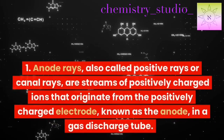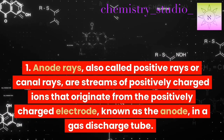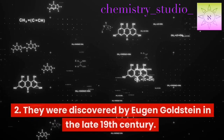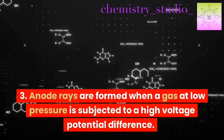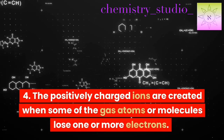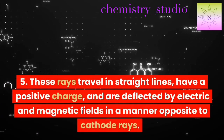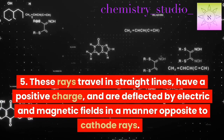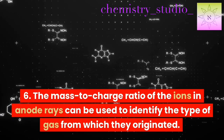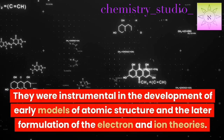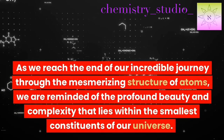Anode rays, also called positive rays or canal rays, are streams of positively charged ions originating from the positively charged electrode (anode) in a gas discharge tube. Discovered by Eugen Goldstein in the late 19th century, they are formed when gas at low pressure is subjected to high voltage. The positively charged ions are created when gas atoms or molecules lose one or more electrons. They travel in straight lines, have a positive charge, and are deflected opposite to cathode rays. The mass-to-charge ratio of the ions can identify the type of gas. They were instrumental in the development of early models of atomic structure and the formulation of electron and ion theories.